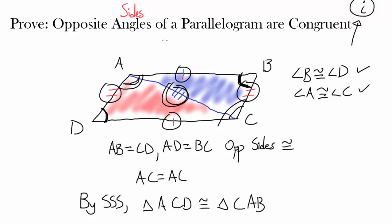And we have proven that angle B is congruent to angle D. And opposite sides... not opposite sides. We have already proven opposite sides in another video. Opposite angles of a parallelogram are congruent.